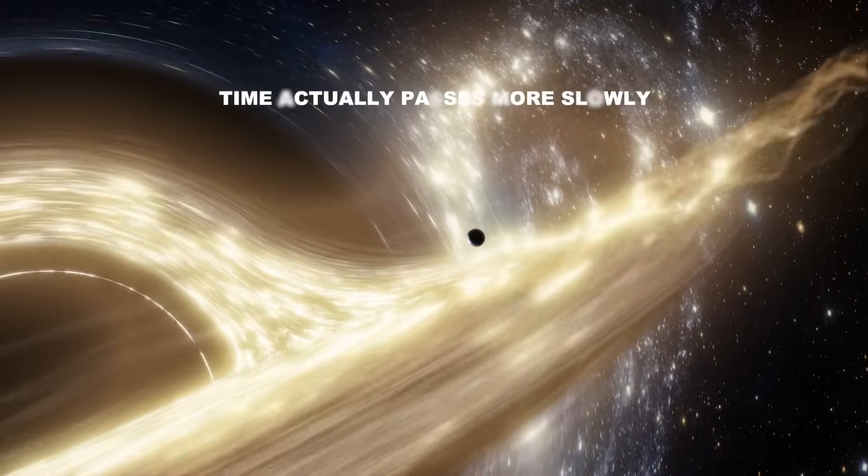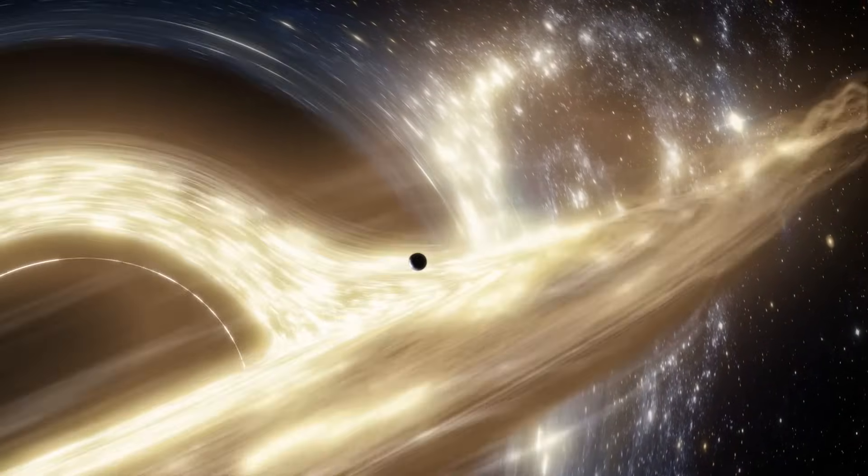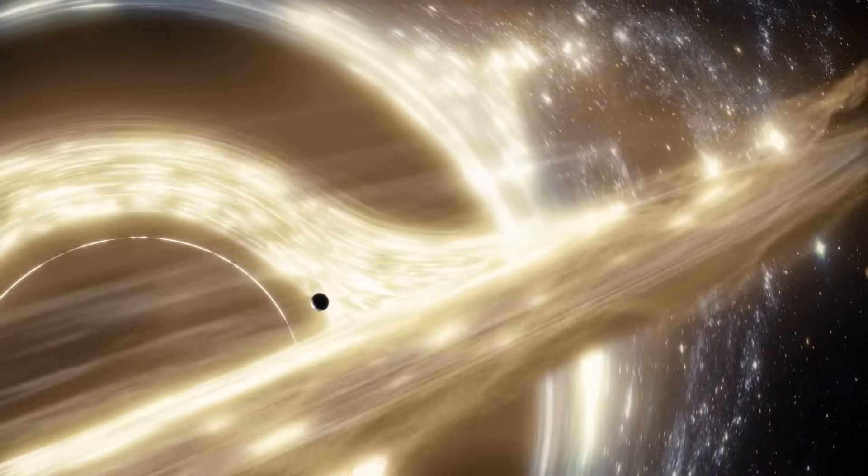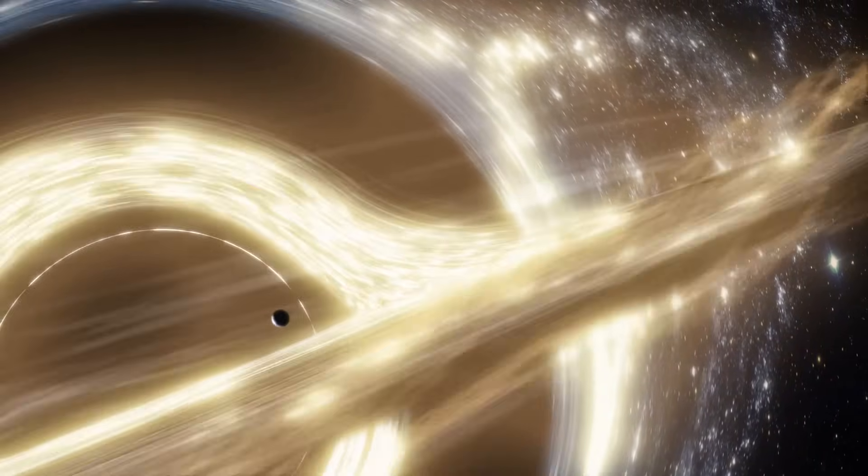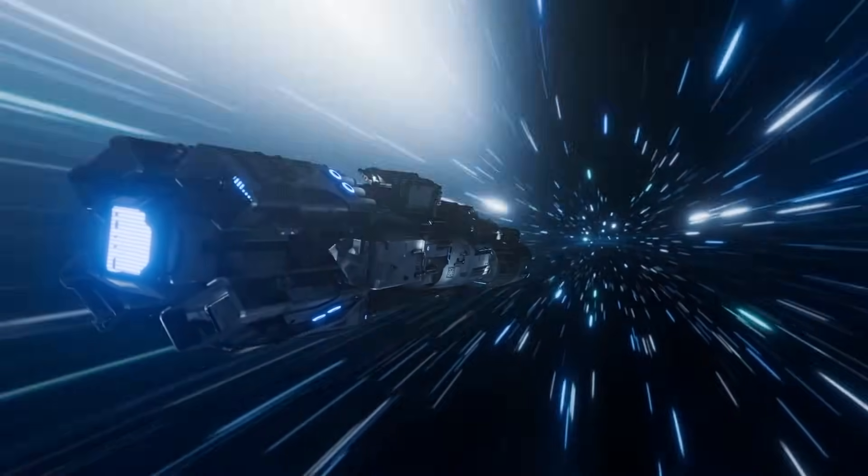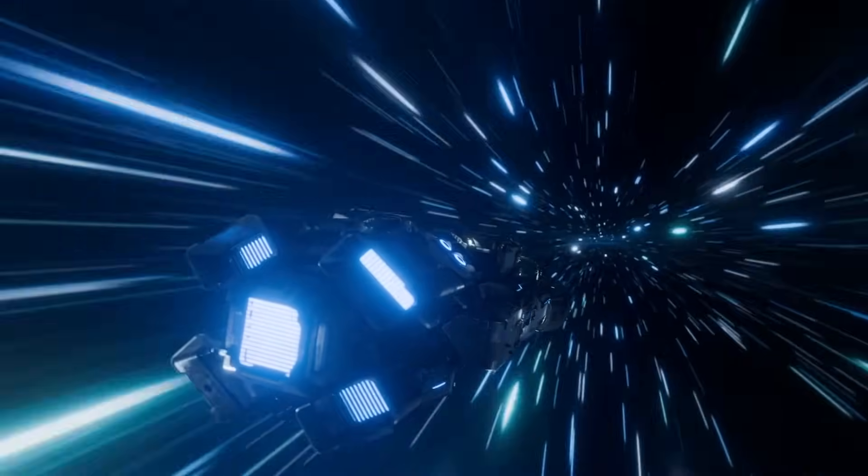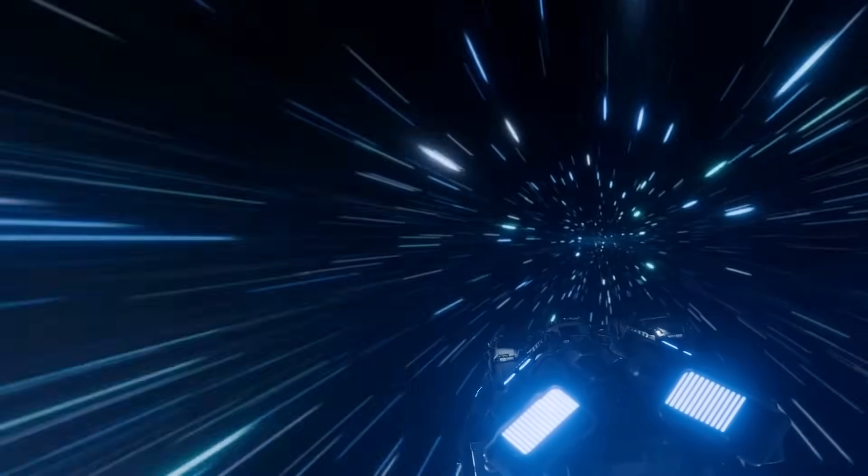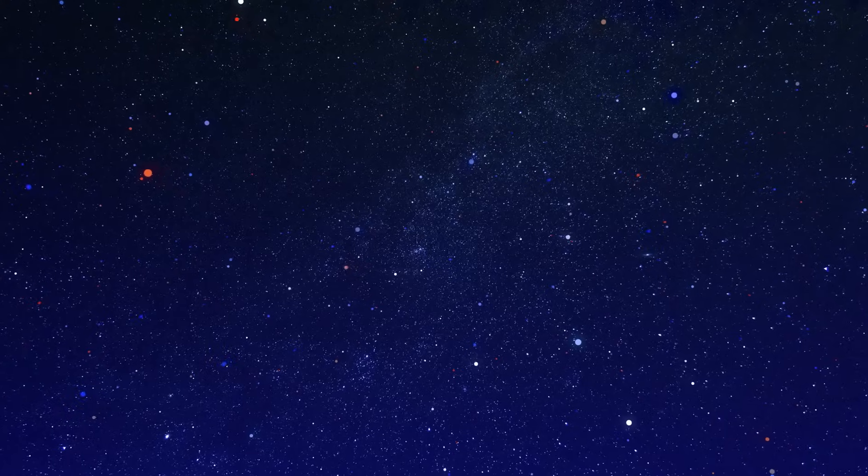This is why time actually passes more slowly near massive objects like black holes. If you could somehow survive near a black hole, you might experience only a few minutes while years pass by on Earth. But it's not just gravity that messes with time. Speed does too. Let's say you're on a super-fast spaceship zooming through the cosmos at nearly the speed of light. While you're busy playing intergalactic ping-pong, time for you would slow down compared to your friends back on Earth. You might return from your space vacation only a year older, but find that decades have passed on your home planet. Talk about jet lag.